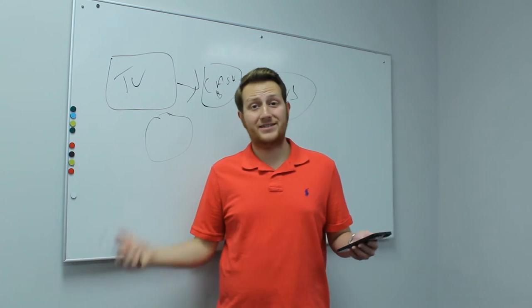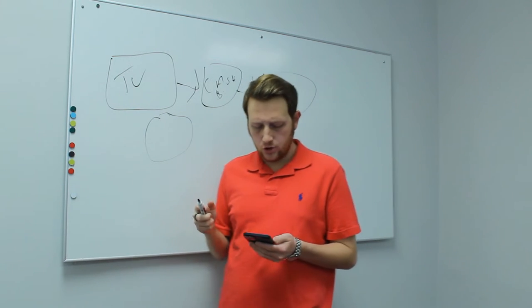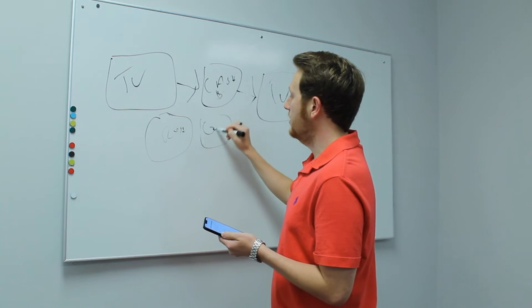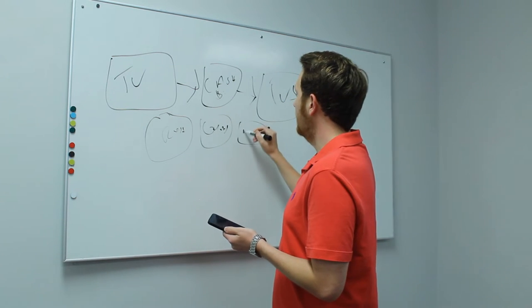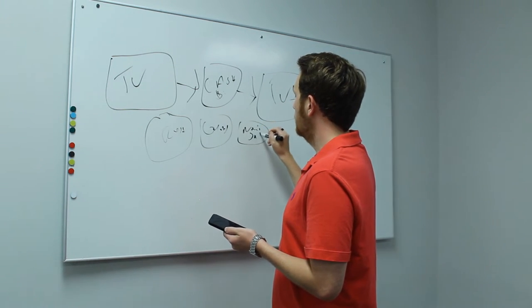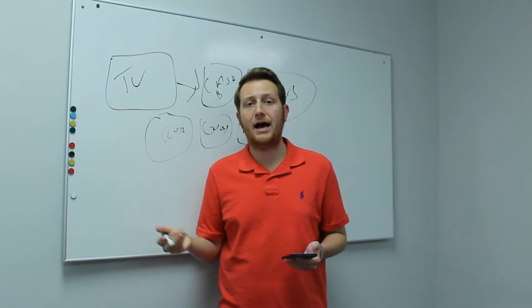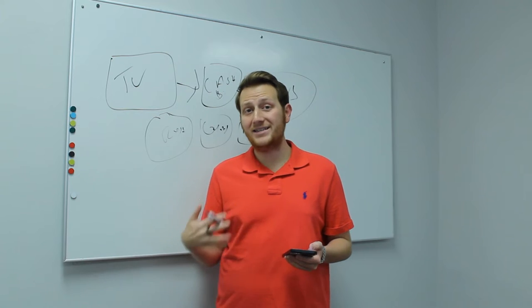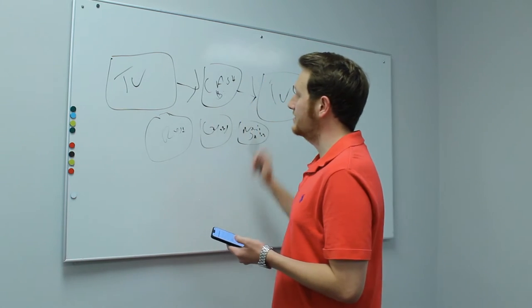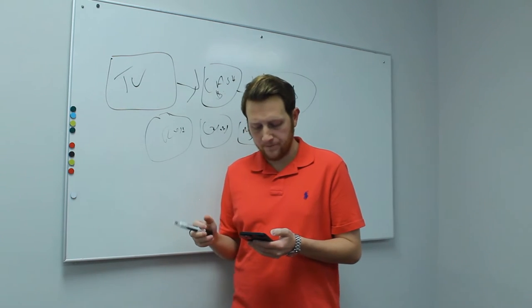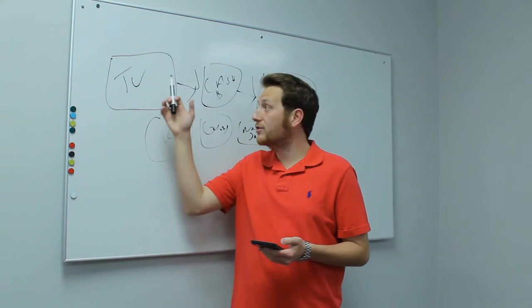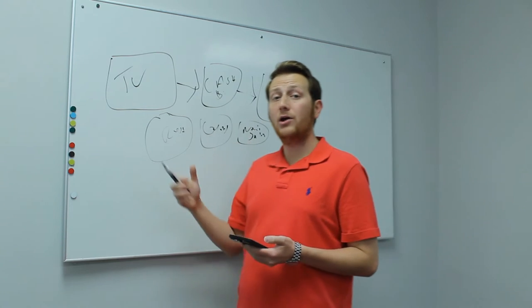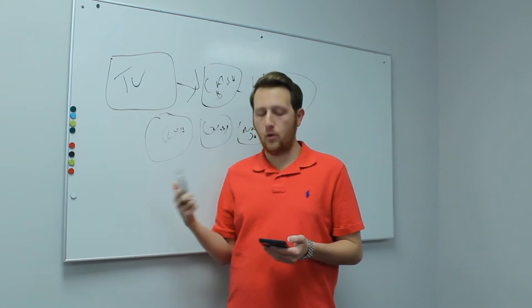Where do we put these TVs at? We put them in restaurants, we put them in gyms, we put them in nail salons - anywhere where there's high traffic. We want to put these TVs in high traffic locations because businesses are gonna pay us to advertise on there. So that is how we make money. The advertisers, the local businesses, pay us monthly or yearly to advertise on the TVs.